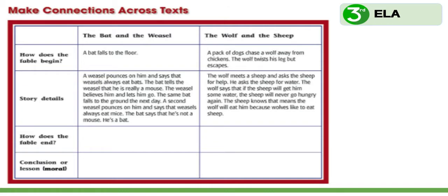Let's think about the ending of each of these fables. In The Bat and the Weasel, the confused weasel lets the bat go, so the bat actually escapes harm twice in our story. In The Wolf and the Sheep, the sheep does not help the wolf at the end.